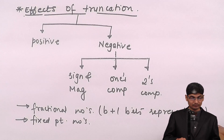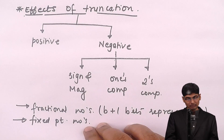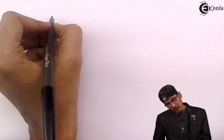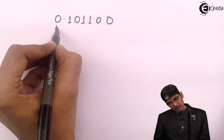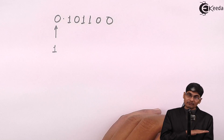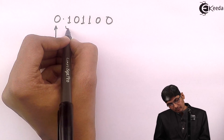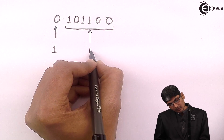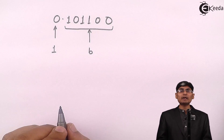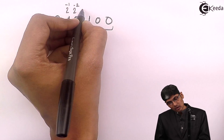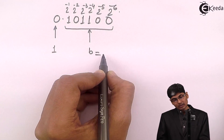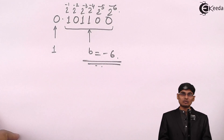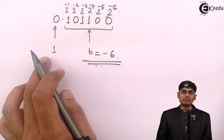Let us understand what b+1 bit representation means. Since we use fractional numbers, a number will always look like 0.101100 — one bit to the left of the binary point and b bits to the right. The positions represent 2^-1, 2^-2, 2^-3, 2^-4, 2^-5, and 2^-6.